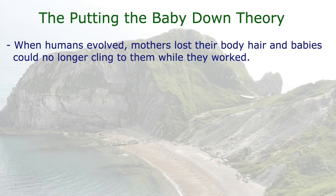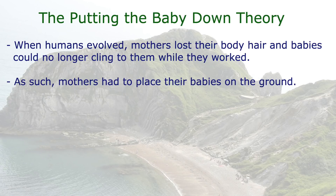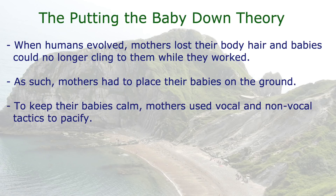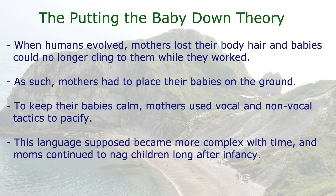Aside from the almost comical names of these theories, many more scientific theories have been developed since the 1860s. One of the most interesting is called the Putting the Baby Down Theory. This theory proposes that when humans evolved, mothers lost the ability to have enough body hair for their babies to cling to them while they gathered food or did other tasks. This resulted in mothers putting their babies down on the ground. Consequently, the babies would become upset and the mothers began to develop a sort of motherese, or a mother language — a collection of vocal and non-vocal ways to console the baby while continuing with a given task. The idea is that language continued to develop from these sounds. That actually makes a lot of sense.